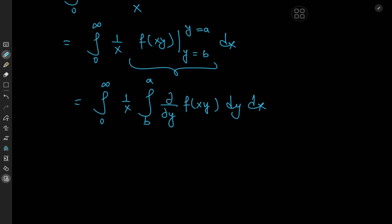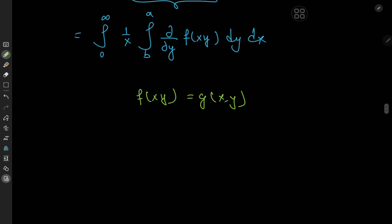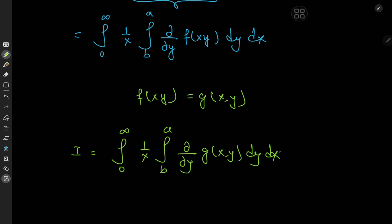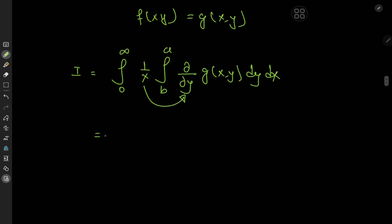We have this structure — so now we take the f(xy) term and write it as a function g(x,y). That means i is written as the integral from 0 to infinity of (1/x) times the integral from b to a of the partial derivative with respect to y of g(x,y) dy dx. The 1/x term is independent of y, so we slip it inside the y-integration operator, giving us the integral from 0 to infinity, integral from b to a of (1/x)(∂g/∂y) dy dx.